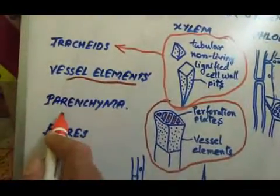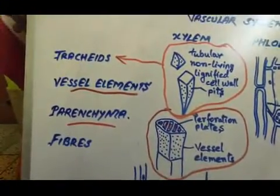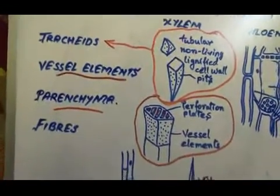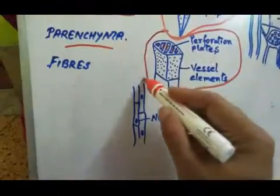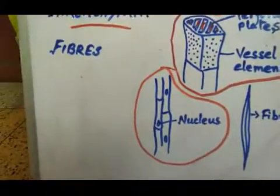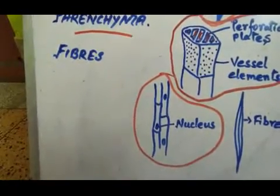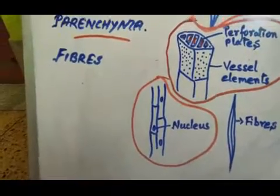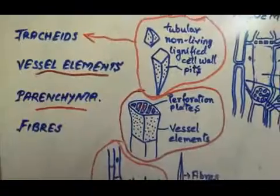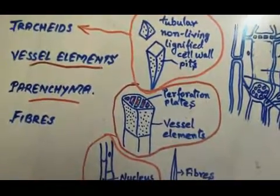Next is the xylem parenchyma. The xylem parenchyma is the only living component of xylem tissues. As you can see in the diagram, these xylem parenchyma are elongated cells containing a nucleus. The xylem parenchyma conducts and stores food for the plant.